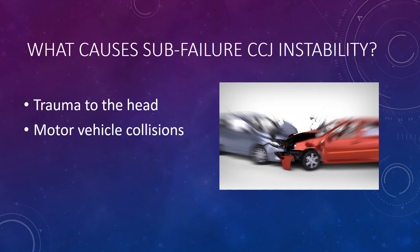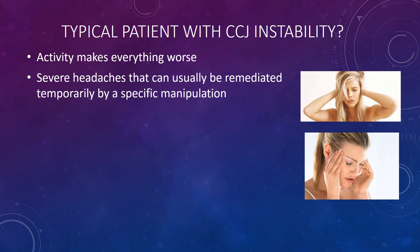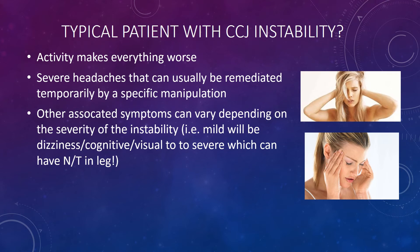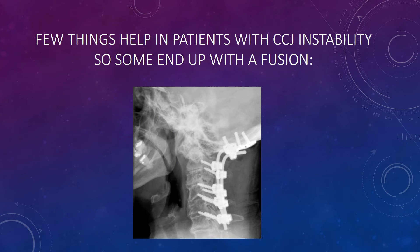What causes these kinds of things? Basically, trauma to the head, motor vehicle collisions, and various situations where patients strike their head or have pressure put on it. The typical patient finds that activity makes everything worse. They've got headaches, which can sometimes be improved by very specific types of chiropractic or physical therapy manipulation. Other associated symptoms vary depending on severity. Physical therapy makes them worse, and pretty much any injection type therapy only helps a little. We're trying to avoid an upper cervical fusion — a huge surgery involving screws in the skull and upper cervical vertebrae with rods — and that's what this new injection technique aims to prevent.